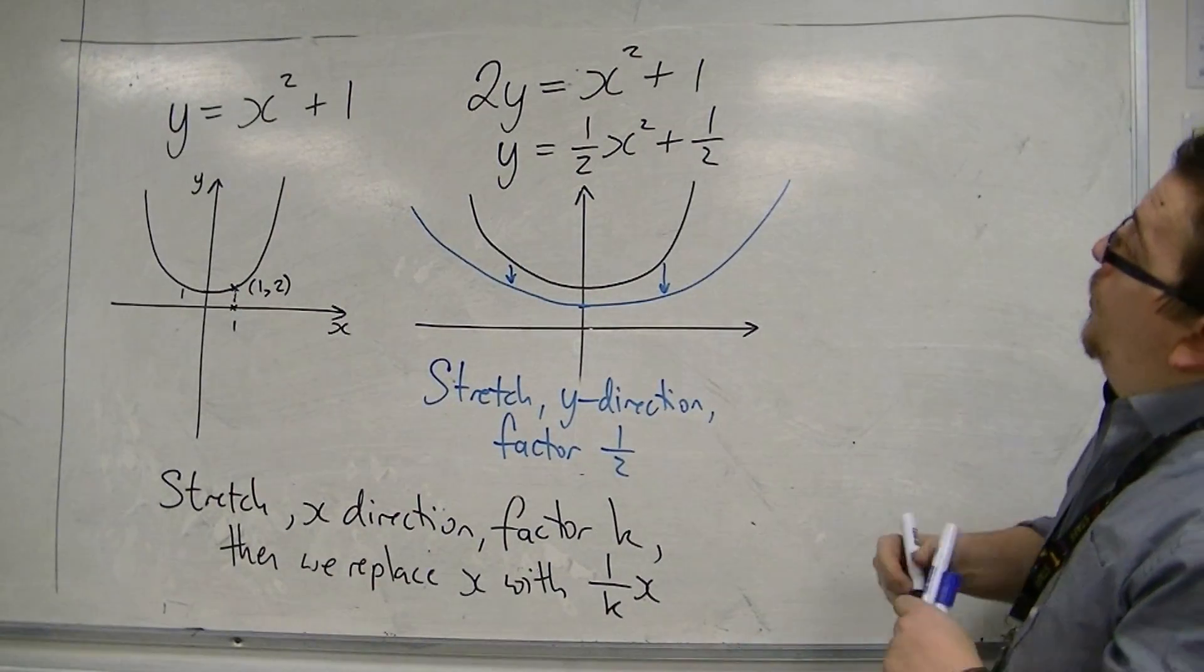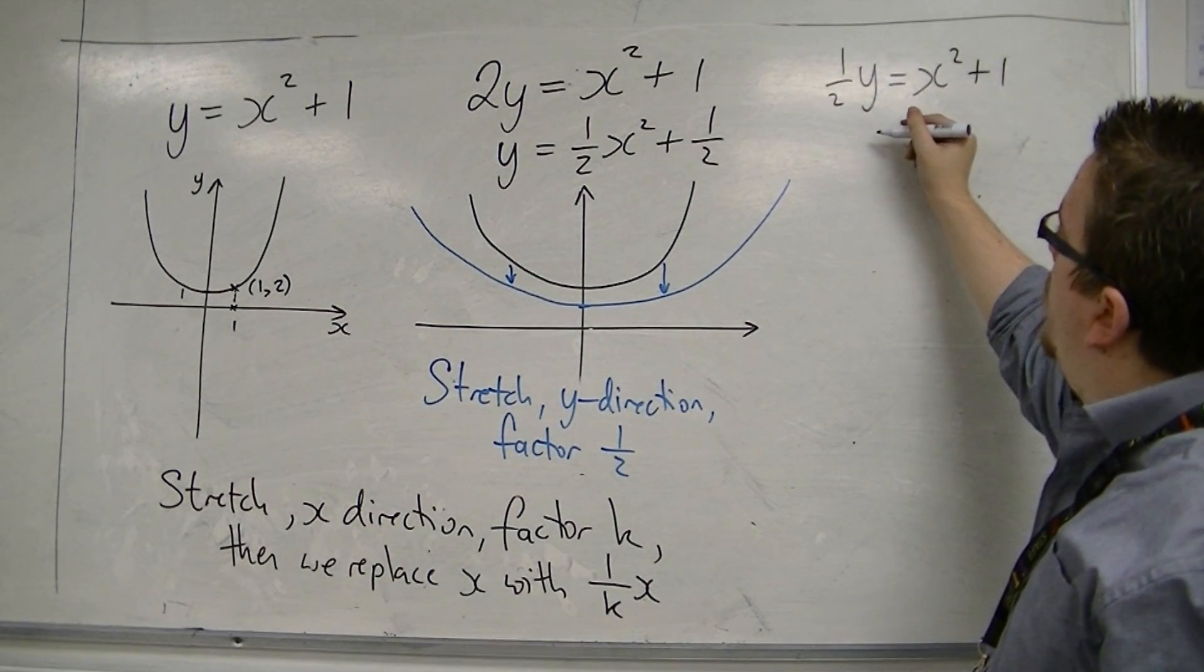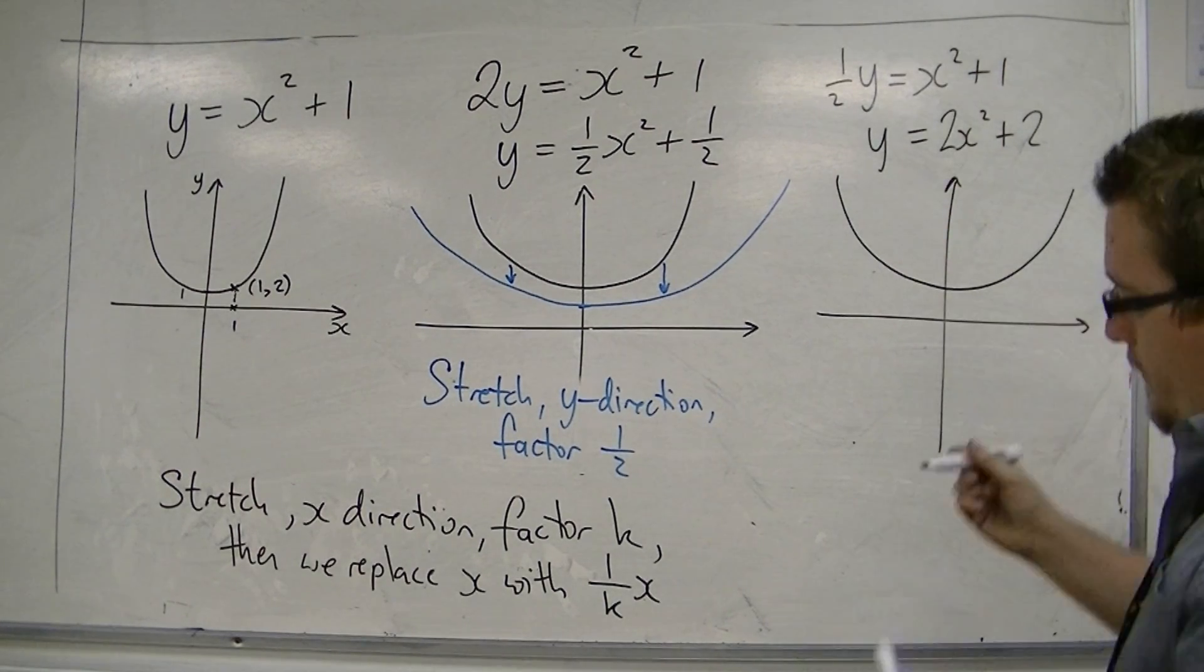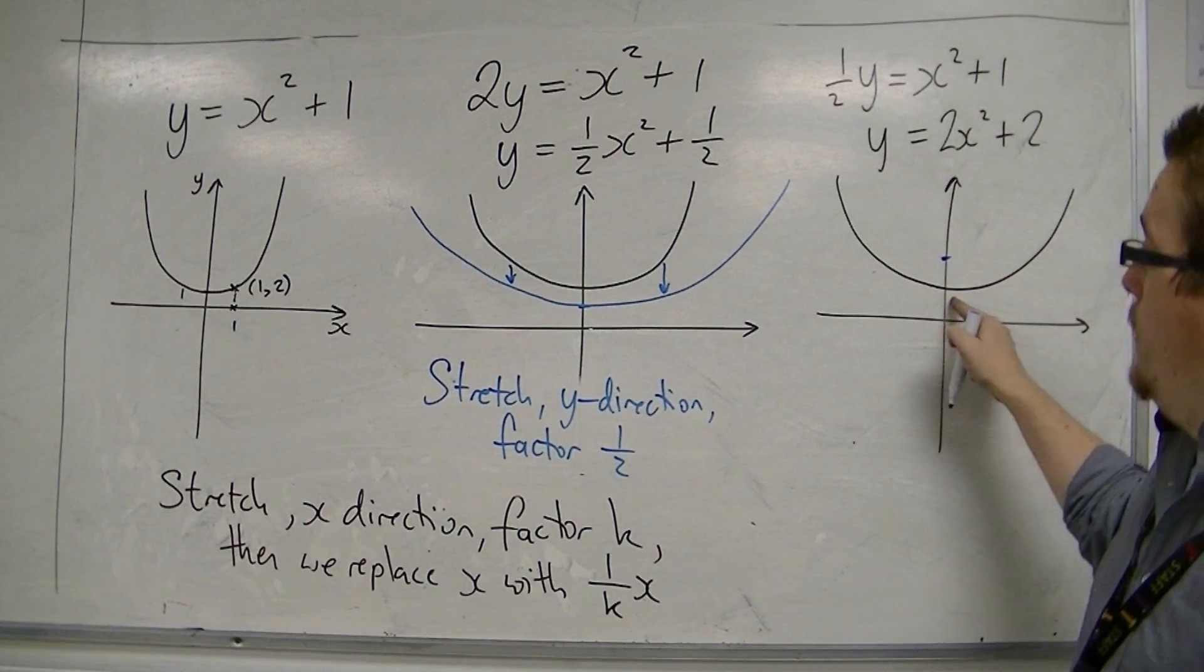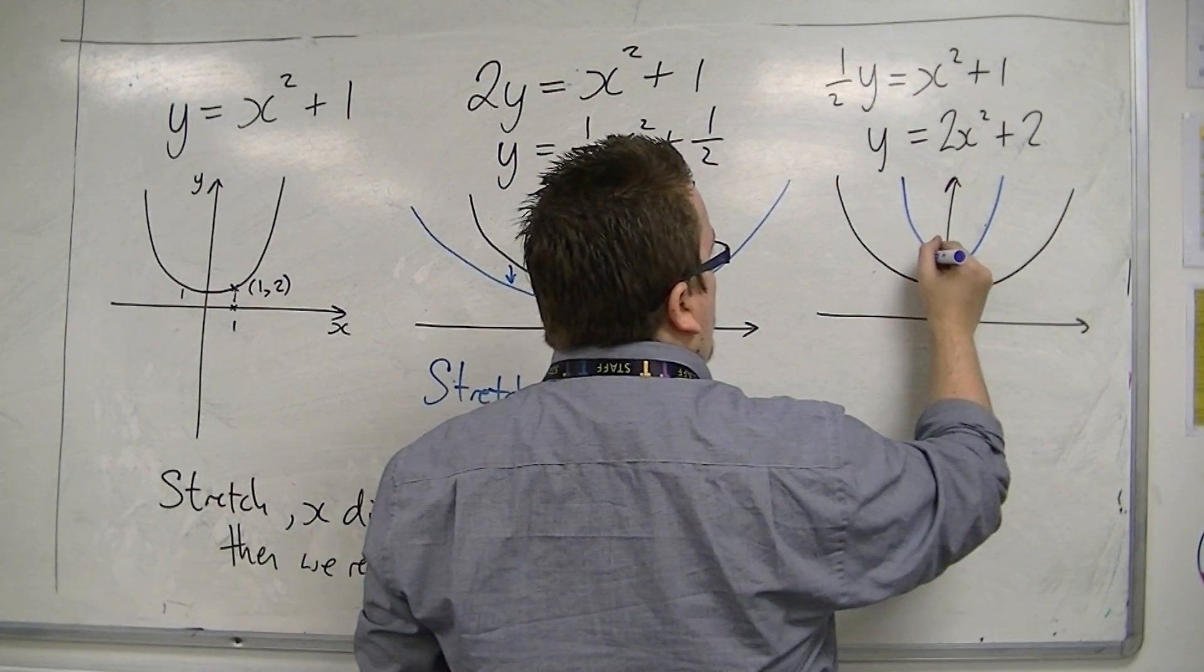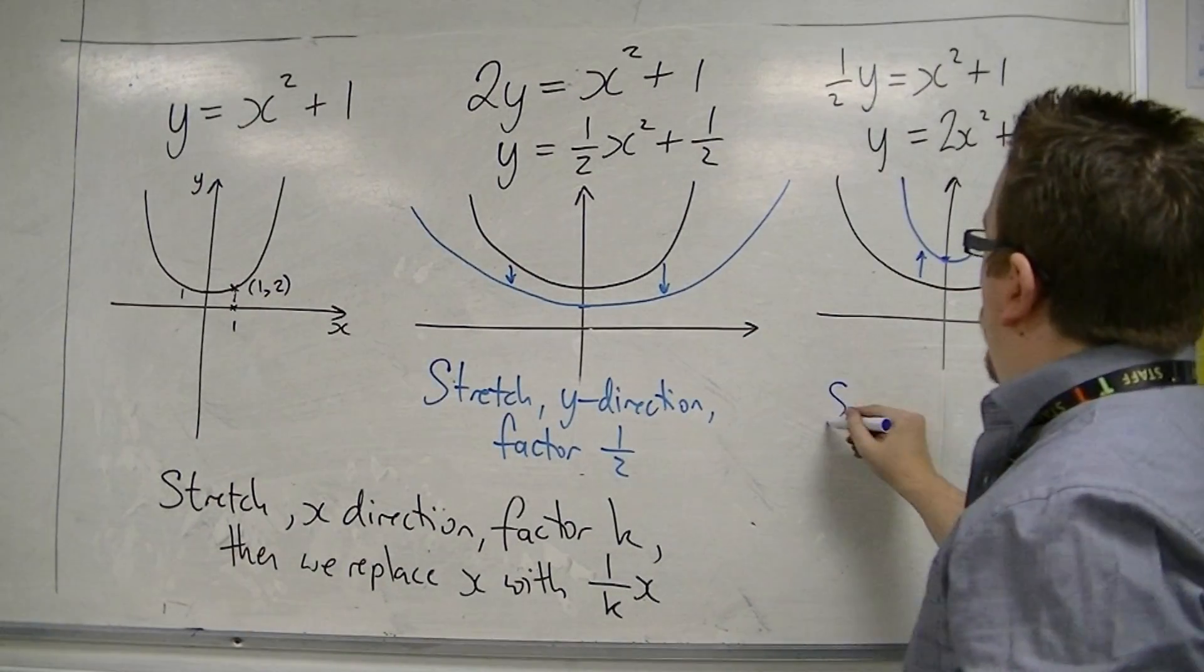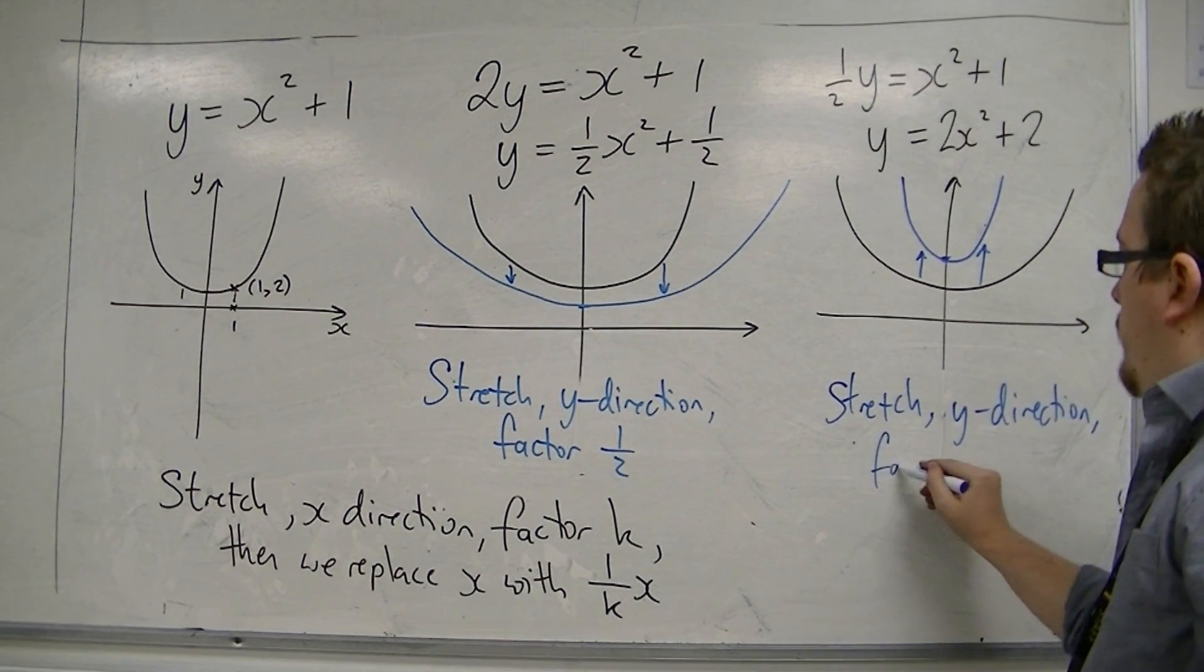If I replaced y this time with one-half y in my original curve, then multiply everything by two, and I get y is two x squared plus two. The original curve looks like that, so that now my new curve will go through two rather than one on the y-axis, and will be thinner as well. This time the curve has been pulled upwards. It's always from that x-axis pulling the graph upwards in this case. So this is a stretch in the y-direction factor two.